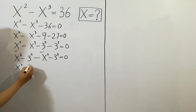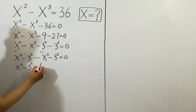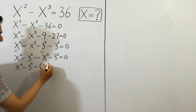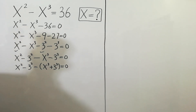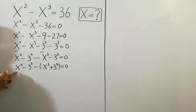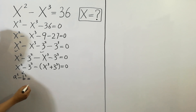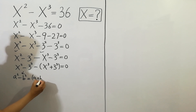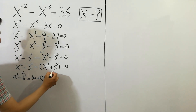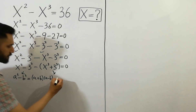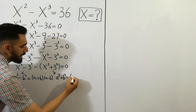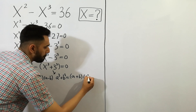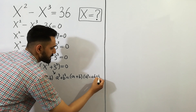And next, x squared minus 3 squared, as it is, minus, taking common, we get x cubed plus 3 cubed is equal to 0. We can note that x squared minus 3 squared equals (x+3)(x-3), and x cubed plus 3 cubed equals (x+3)(x squared minus 3x plus 9).